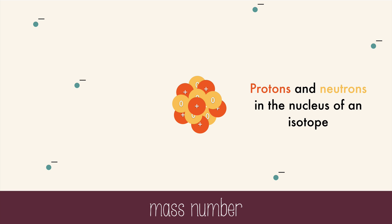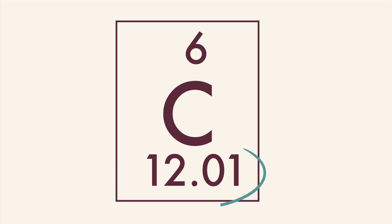The protons and neutrons in the nucleus of an isotope is the mass number, so I would expect the mass to be exactly 12, but if you look at the periodic table for this same element, the atomic mass is not exactly 12.